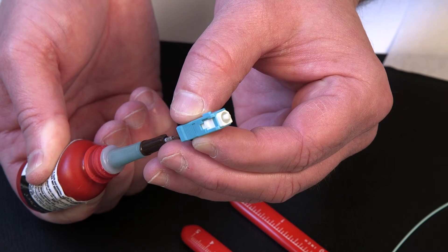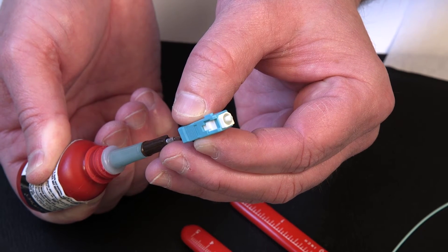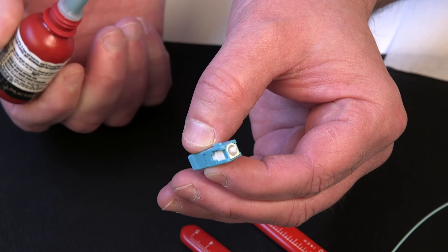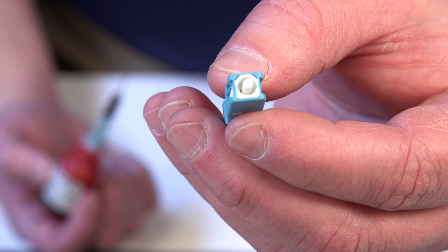Continue until a dot of adhesive is visible at the other end. Then remove the needle. Wipe away excess adhesive from the end of the ferrule.